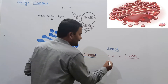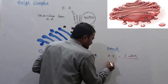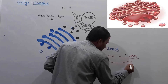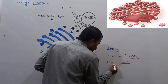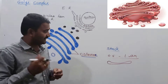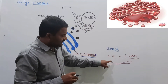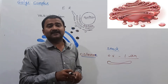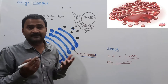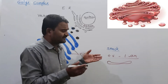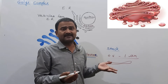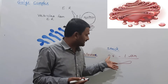Consider one cisterna — it has two opposite membranes. The thickness and chemical composition of these two membranes is different from each other. These two membranes are different from one another.